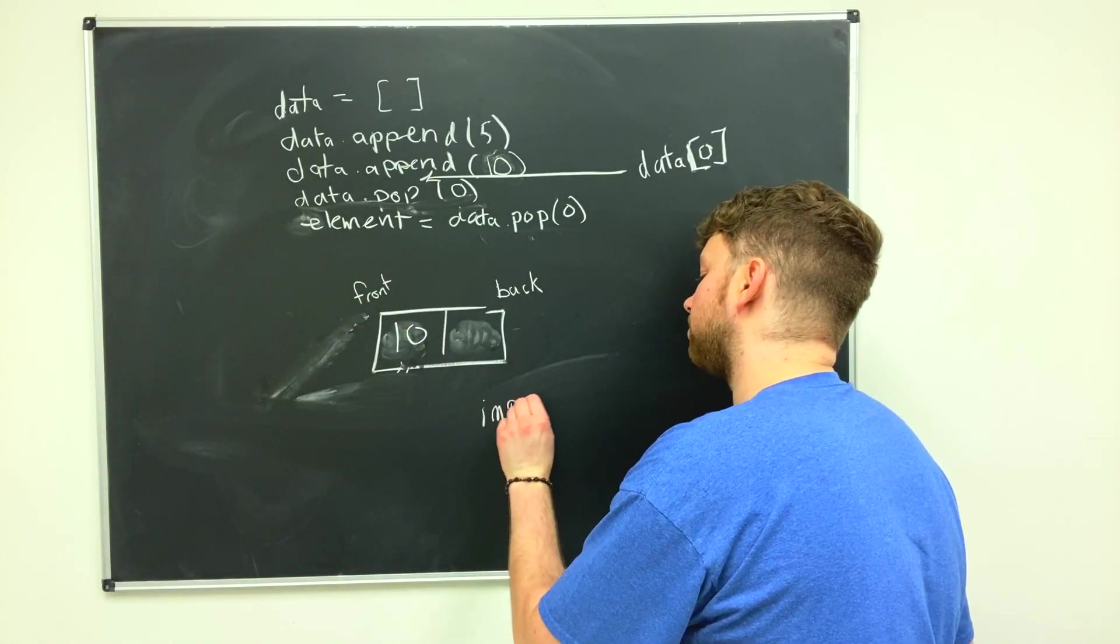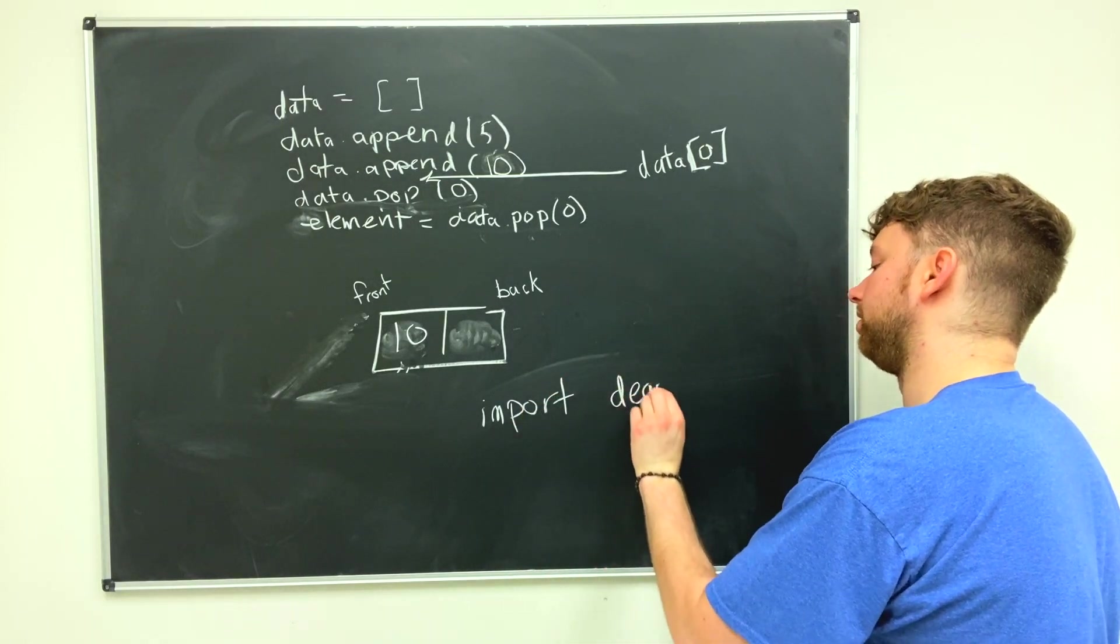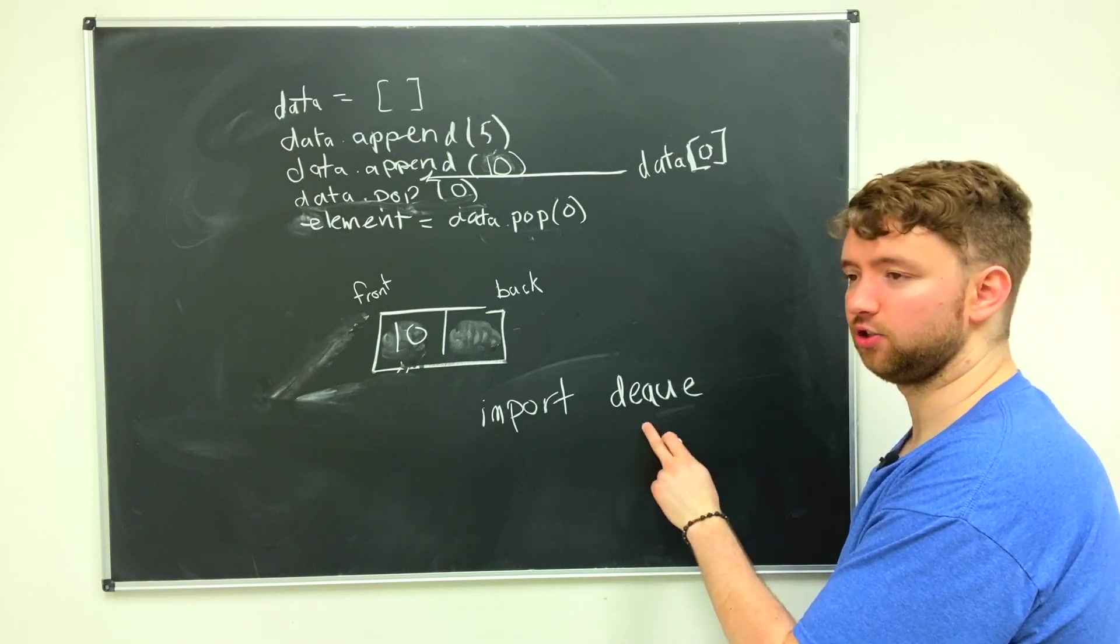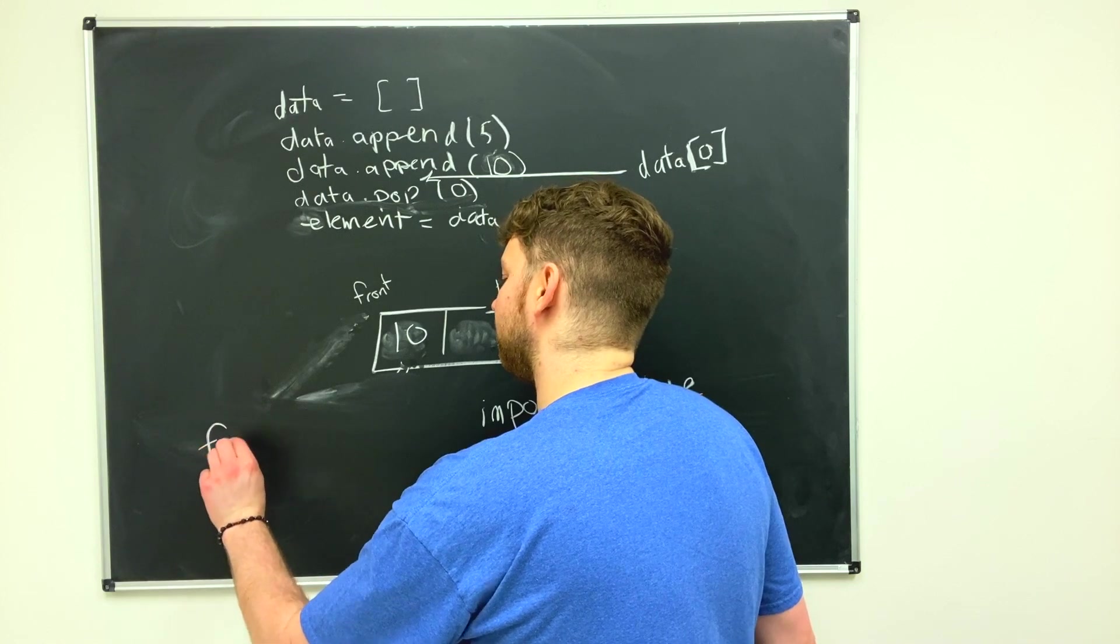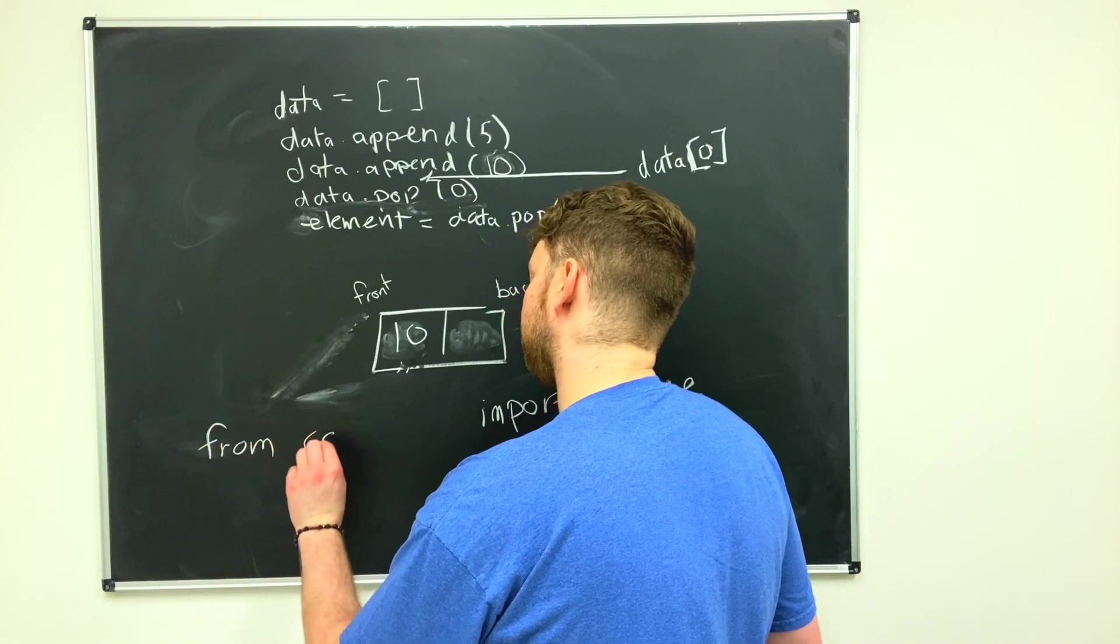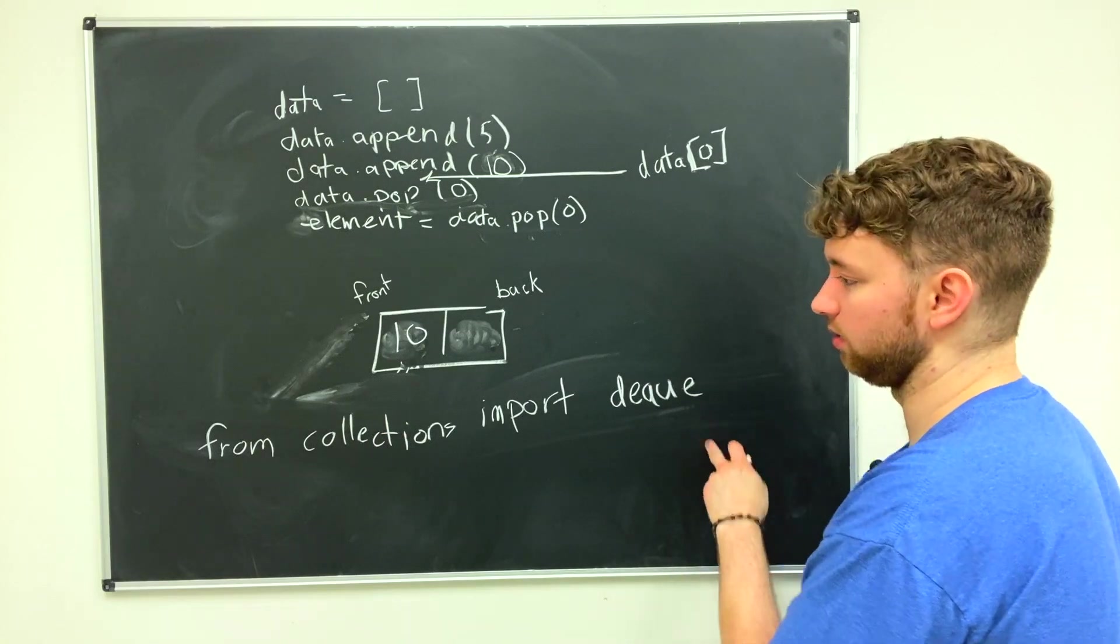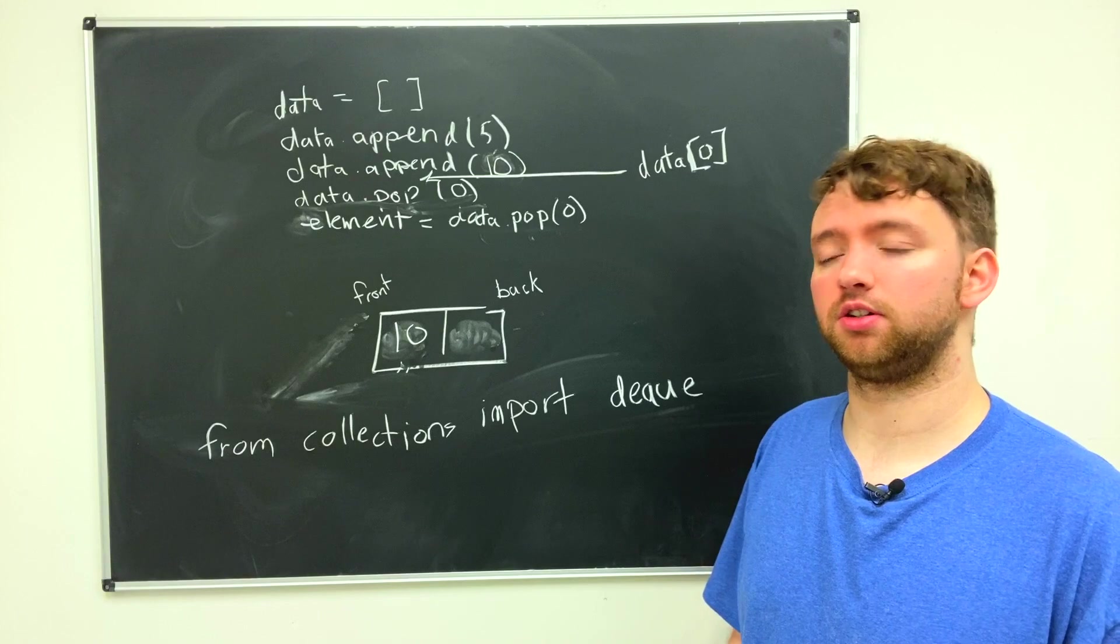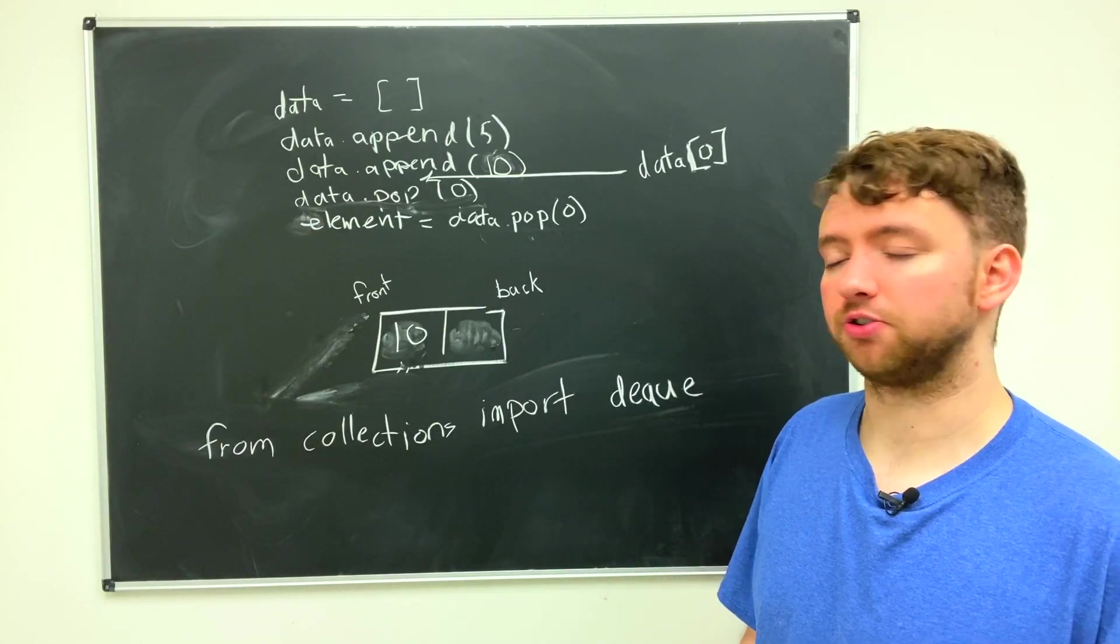Called a deque. Just deque, not queueue. And this is from collections. So you can say from the collections library import deque. We're not going to talk about how to use that, but you can research that if you want to know a better way of implementing a queue structure inside of Python.